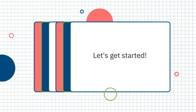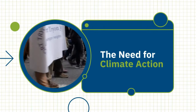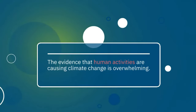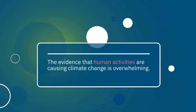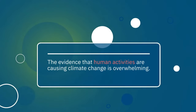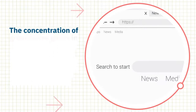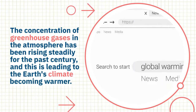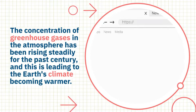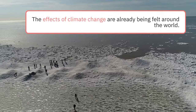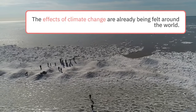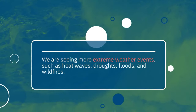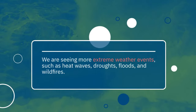The need for climate action: the evidence that human activities are causing climate change is overwhelming. The concentration of greenhouse gases in the atmosphere has been rising steadily over the past century, and this has led to the earth's climate becoming warmer. The effects of climate change are already being felt around the world. We are seeing extreme weather events such as heat waves, droughts, floods, and wildfires.